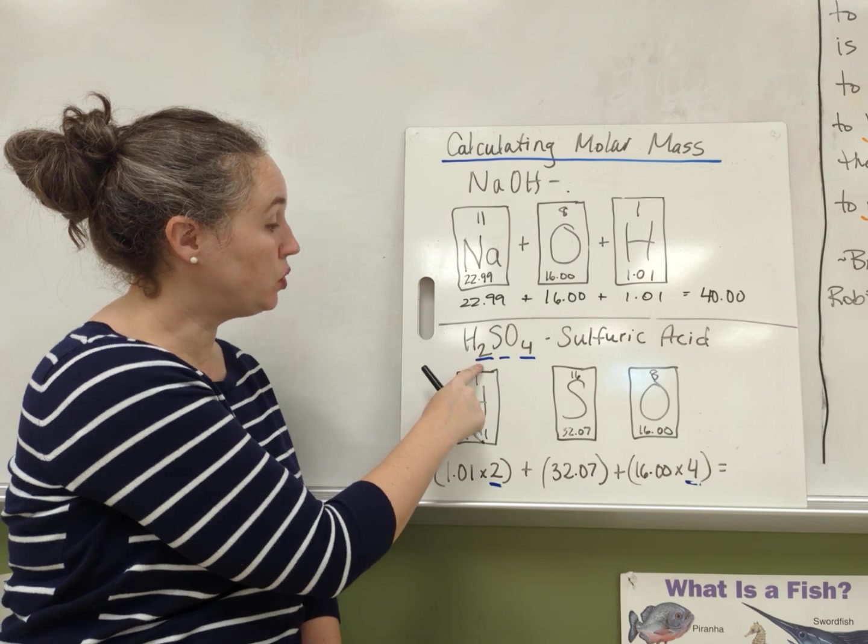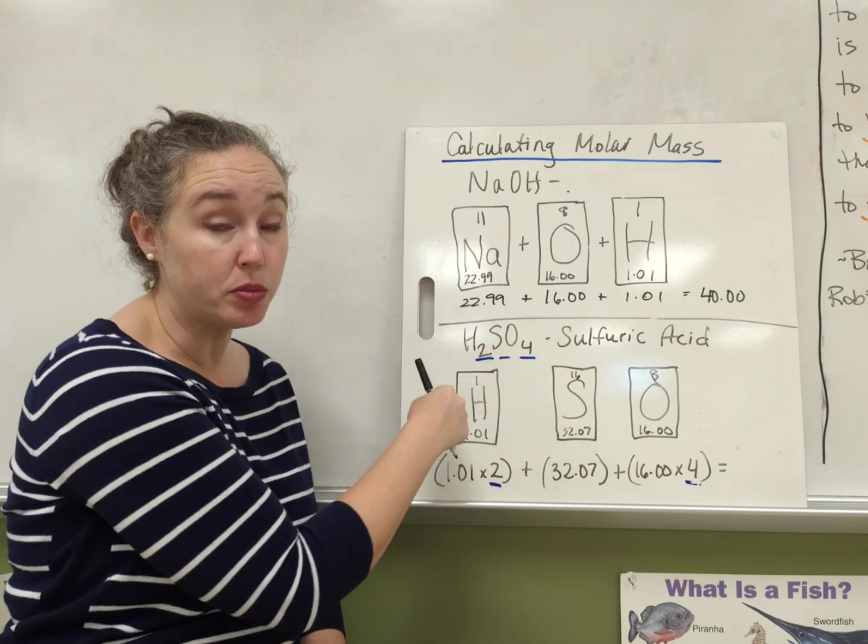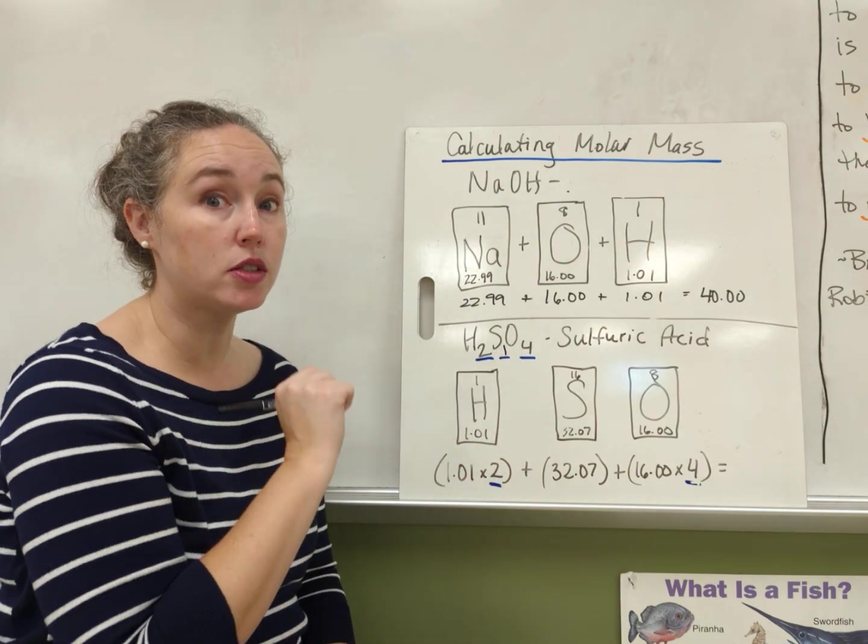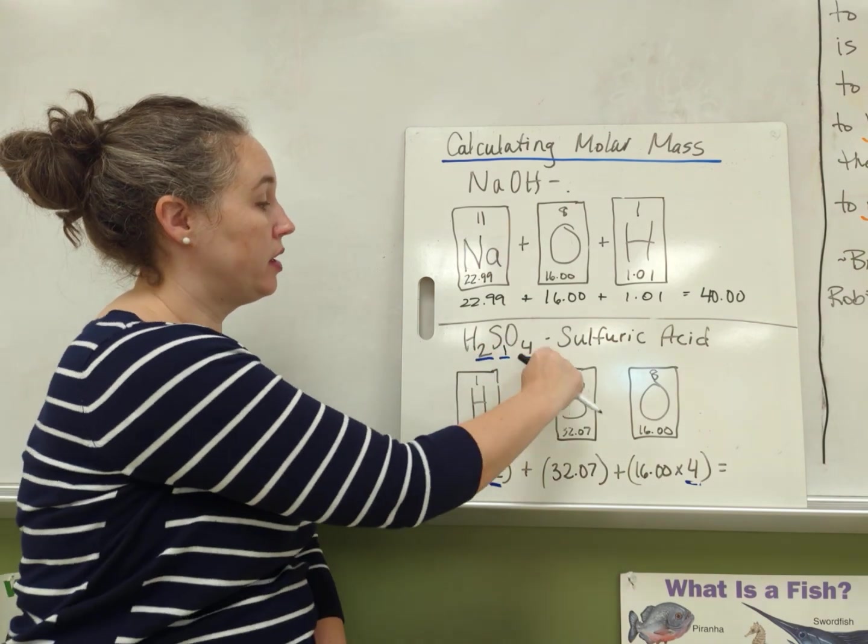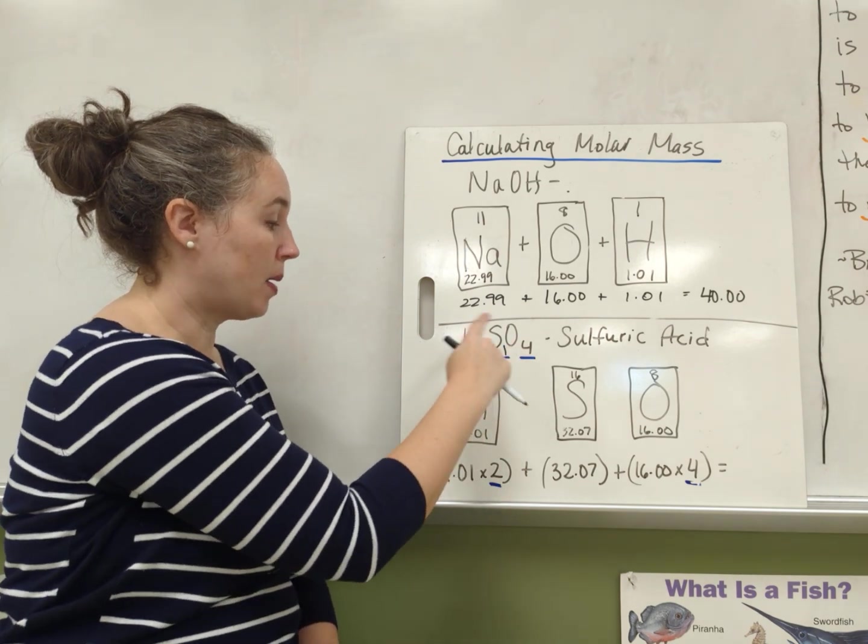So in this case, I have two hydrogens. Sulfur doesn't have a subscript, so we understand that as one. We have one sulfur and then four oxygen atoms in one sulfuric acid molecule.